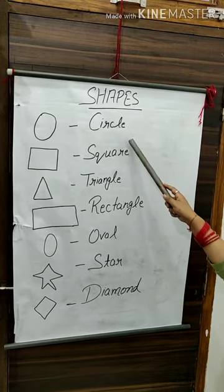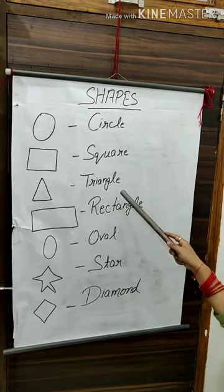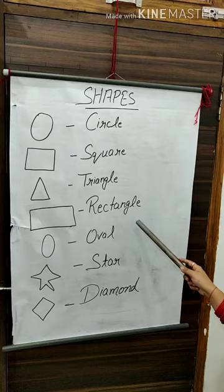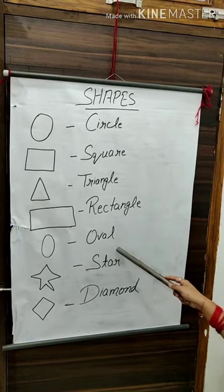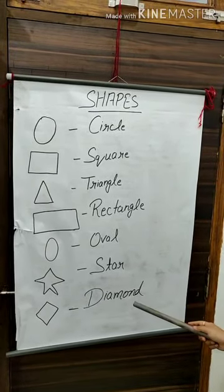Circle, square, triangle, rectangle, oval, star and diamond.